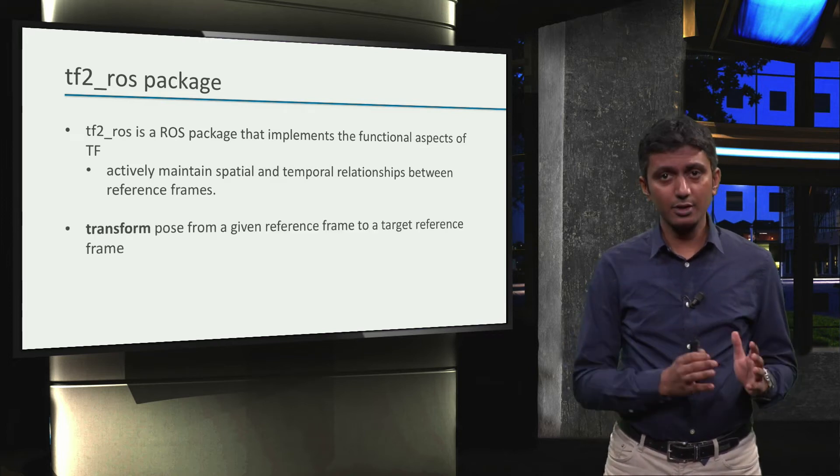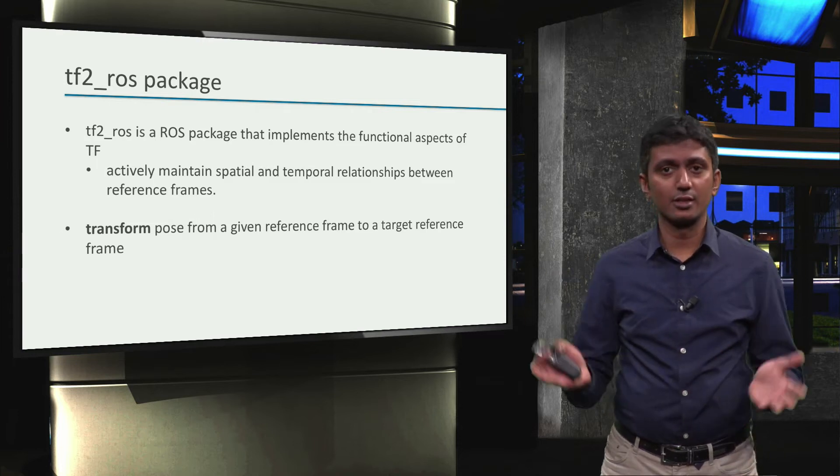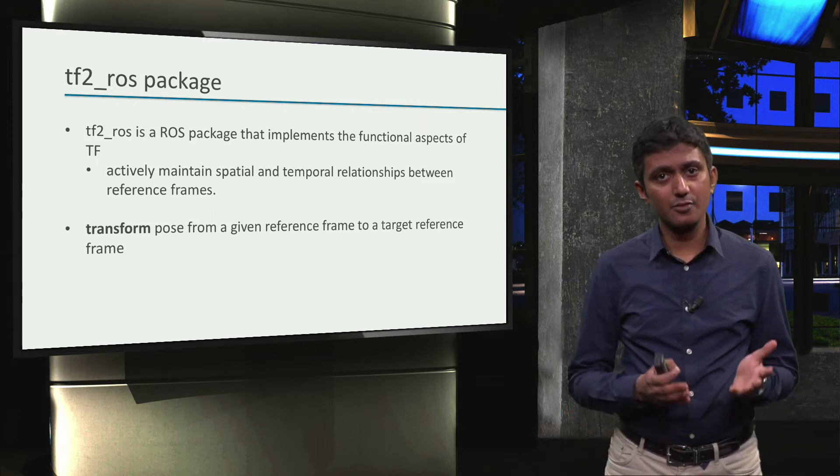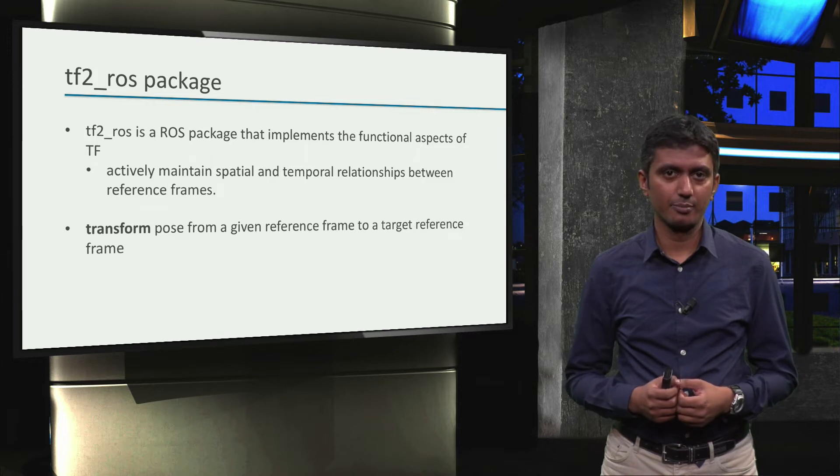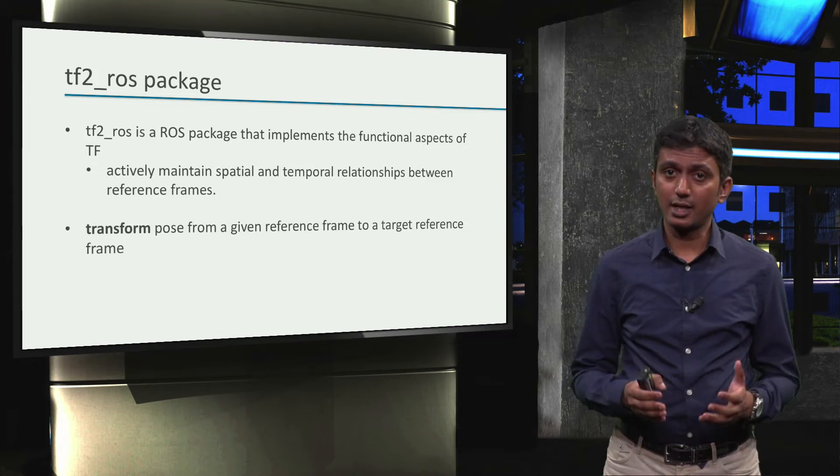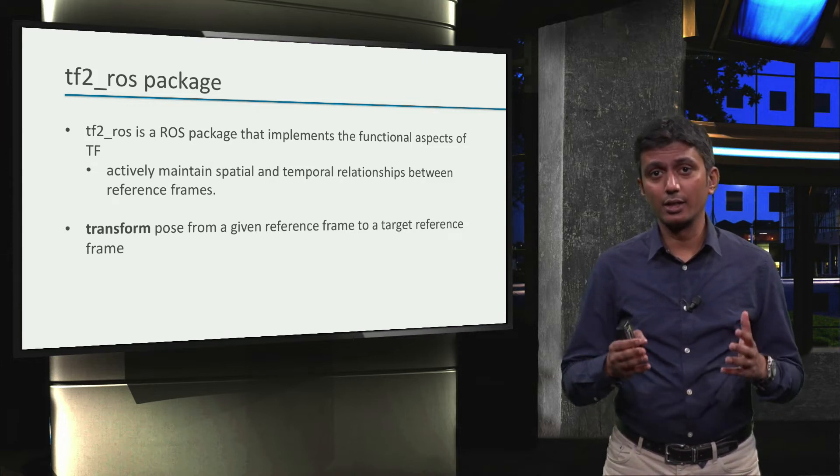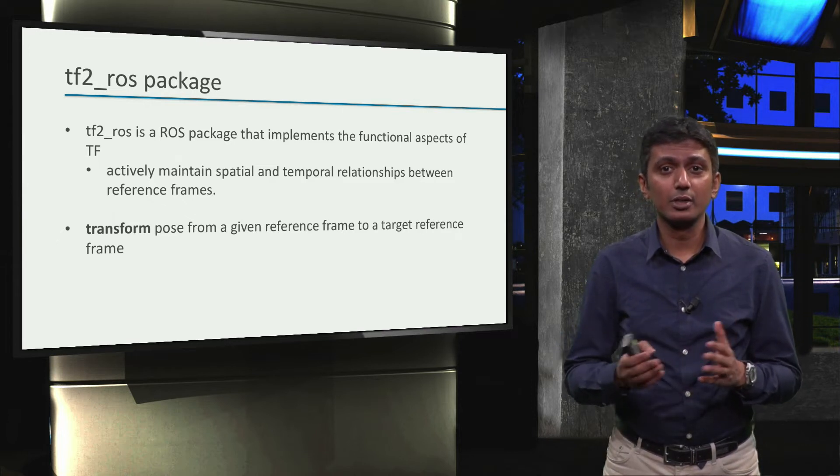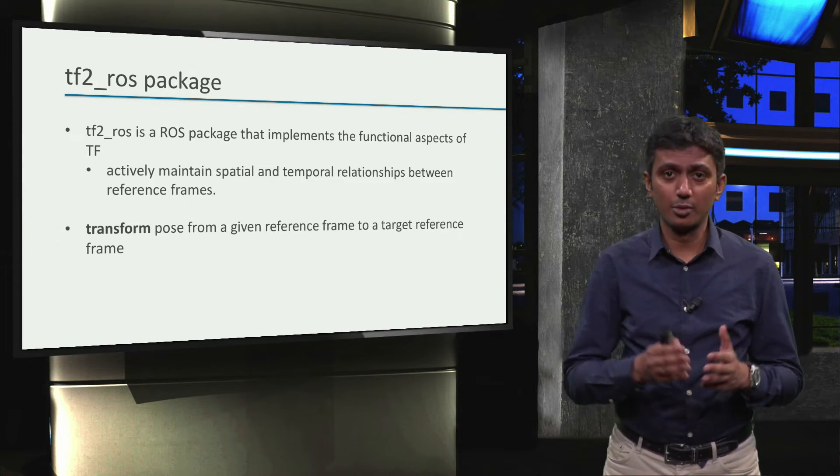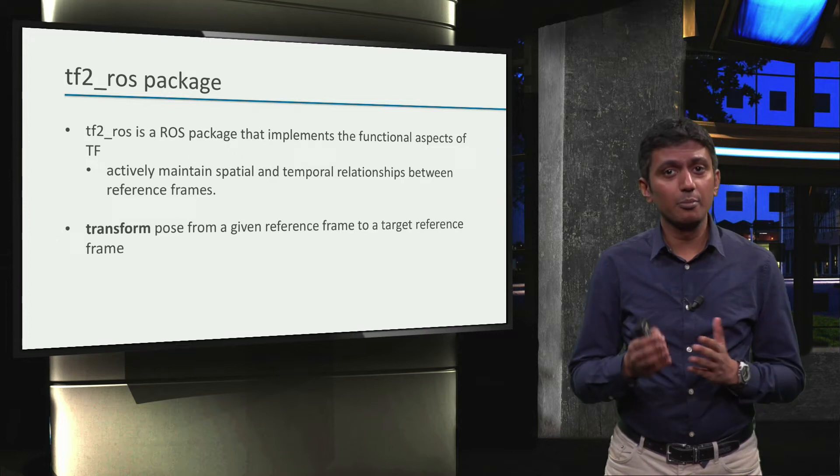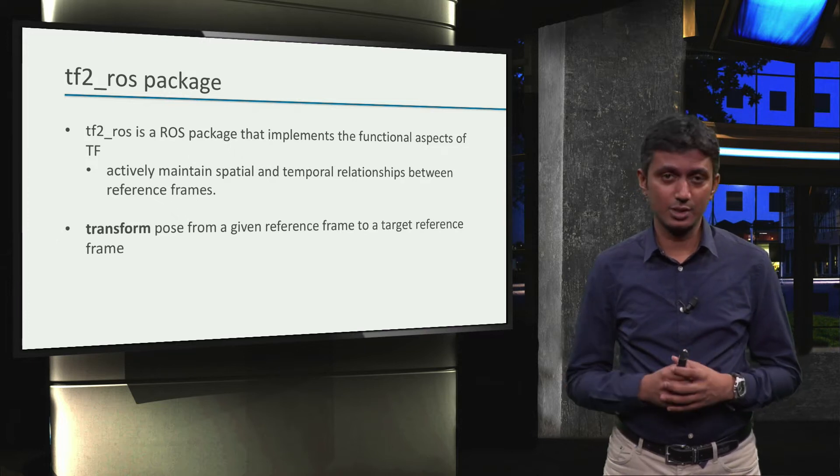For example, given a pose of an object in a certain reference frame, we can transform it into a target reference frame. And this is exactly what we will be doing in this module to actually compute the target pose for our robot arm end effector to manipulate the object detected by the logical camera.